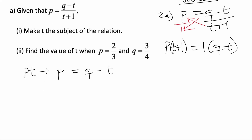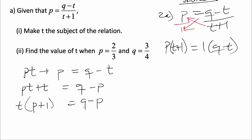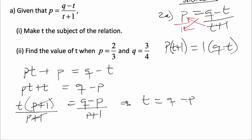We group like terms: pt plus t is equal to k minus p. Then when we factorize t out, we get t(p plus 1) is equal to k minus p. To make t the subject, we divide everything by the coefficient of t, which is (p plus 1). So t is equal to (k minus p) all over (p plus 1). This is our answer to Question 2a(i).